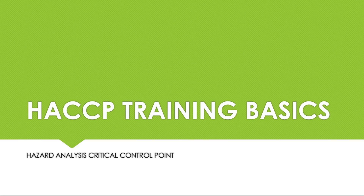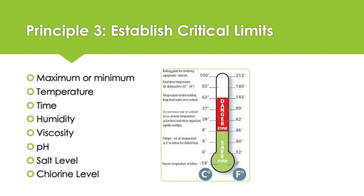Welcome to our HACCP principles training. Setting the critical limits is the third principle. In order to prevent, eradicate or minimise the occurrence of a food safety hazard to an acceptable level, a biological, chemical, physical or allergenic characteristic must be regulated at a CCP to a maximum and/or minimum value known as our critical limit.